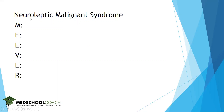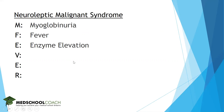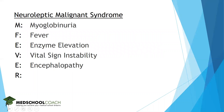It's useful to understand neuroleptic malignant syndrome with the mnemonic 'MFEVER.' M is for myoglobinuria — on the UA you'll see positive for blood but negative for RBCs, because there are no actual red blood cells; the dipstick picks up myoglobin instead. F is for fever. E is for enzyme elevation, typically elevated CK. V is for vital sign instability, mostly tachycardia. E is for encephalopathy, meaning altered mental status. R is for rigidity of the muscles. NMS is essentially an exaggeration of the extrapyramidal symptoms seen with antipsychotics.